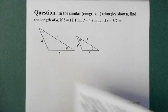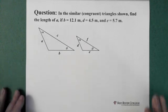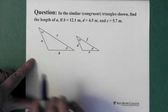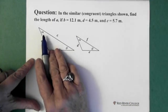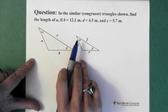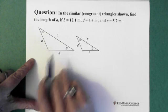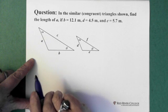Okay. So here's another question. Here we have similar triangles. And they're also called congruent triangles. And in similar triangles, the angles are the same. And the sides are proportional to one another because the angles are the same.